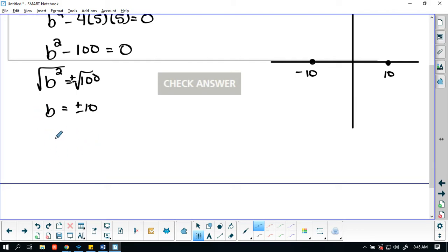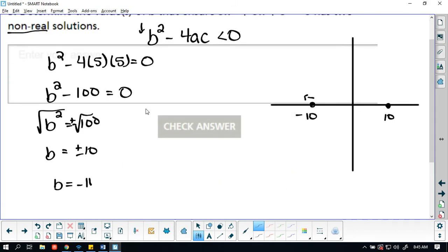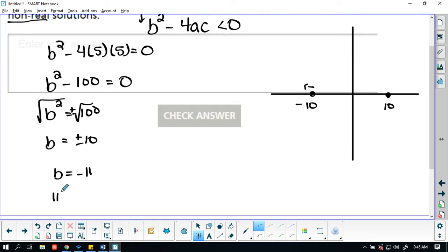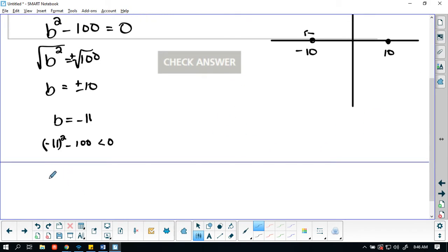So we're looking at left of this point. We get 11 squared minus 100. We're going to see if this is less than zero. So negative 11 squared, I believe is 121. So this is 121 minus 100. Is this less than zero? Well, no, 21 is not less than zero. This is not true. So we know we're not dealing with any numbers left of negative 10.